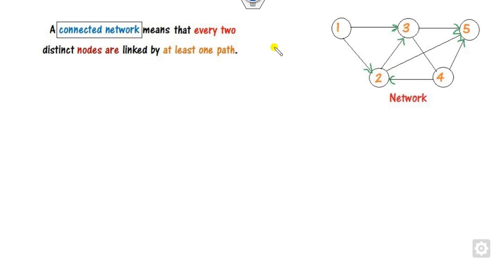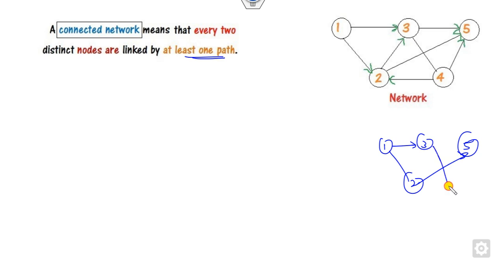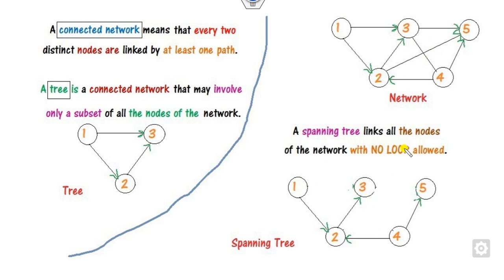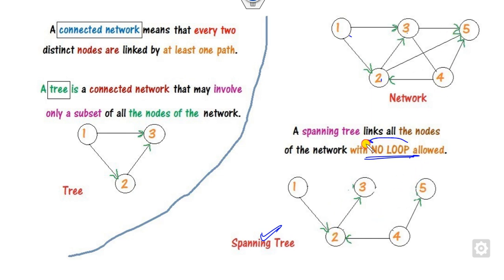A connected network means any two nodes are connected by at least one path. If even one pair of nodes — say 2 and 4 — is not connected, it is not a connected graph. If you consider a subset of nodes, say 3 or 4 out of 5, we call that a tree. On the other hand, if you consider all 5 nodes with no loops, that is a spanning tree. The spanning tree always has no loops, and our target is to construct a spanning tree consisting of all nodes such that no loop exists.